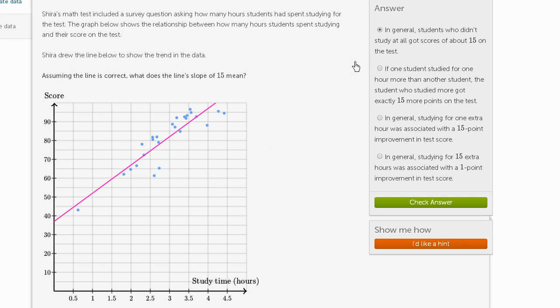Now let's see which of these are consistent. In general, students who didn't study at all got scores of about 15 on the test. This is not true. We don't see that the people who didn't study at all got 15 on the test, and that's definitely not what this 15 implies. This doesn't say what people who didn't study at all get.